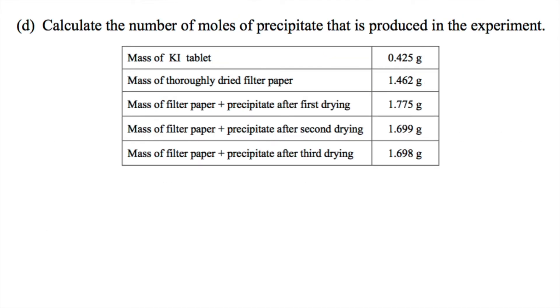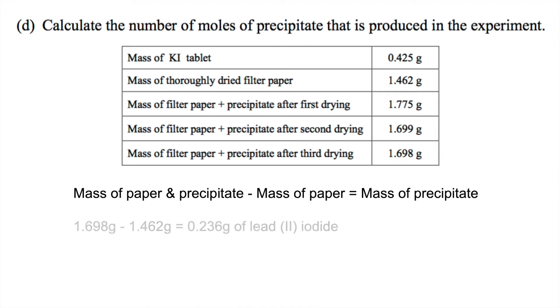And then part D says, calculate the number of moles of precipitate that is produced in the experiment. So we have the mass of the paper and the precipitate minus the mass of the paper to get the precipitate. What is the mass of the paper? Well, we can see that when it was thoroughly dried, it was 1.462 grams. The mass of the paper and the precipitate is going to be the mass after the third drying, because that is when we ensure that there isn't any water making up that mass. So we're going to have 1.698 minus 1.462 as equal to 0.236 grams of the precipitate, which is lead-to-iodide.